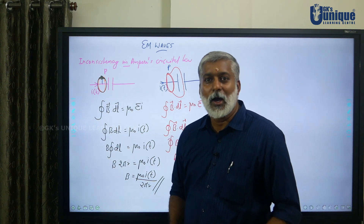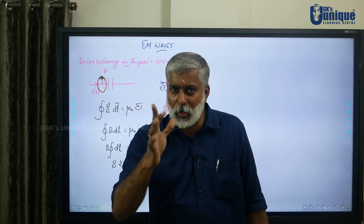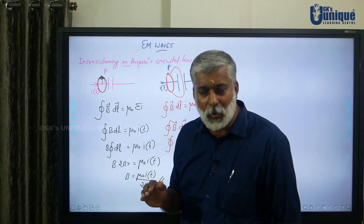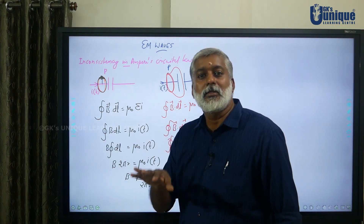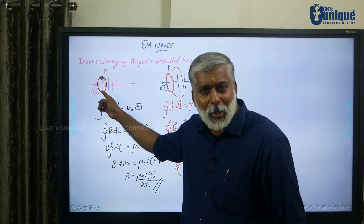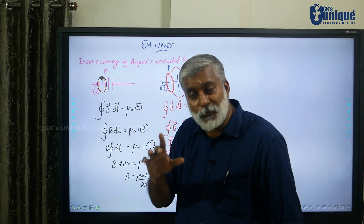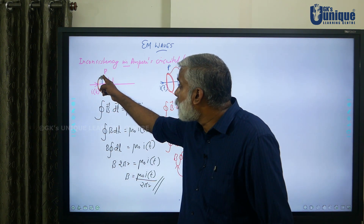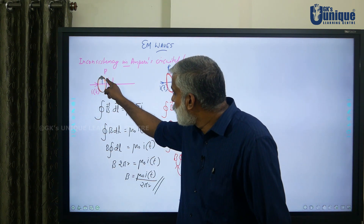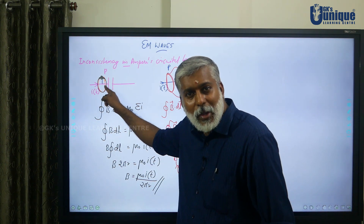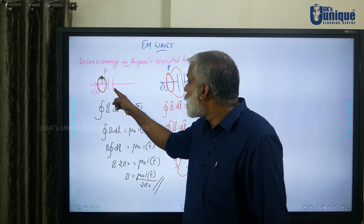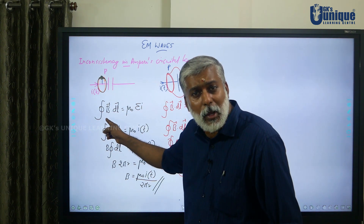In Method 1, I got B = μ₀ I(t) / 2πr, and in Method 2 I got B = 0. I must get the same answer in both cases, but I am getting two different answers. This is the inconsistency in Ampere's Circuital Law — something is missing somewhere.